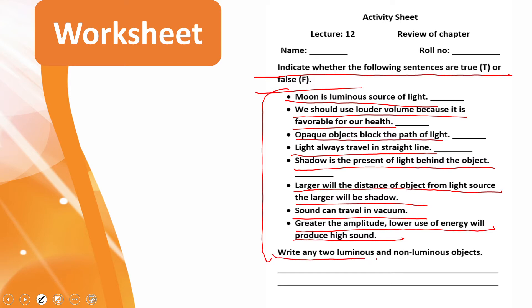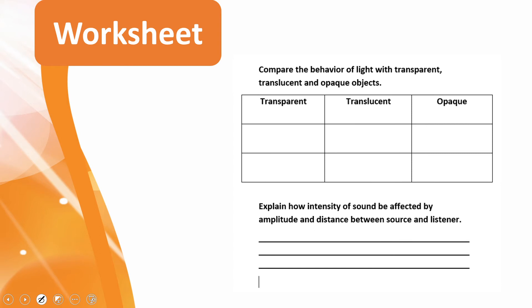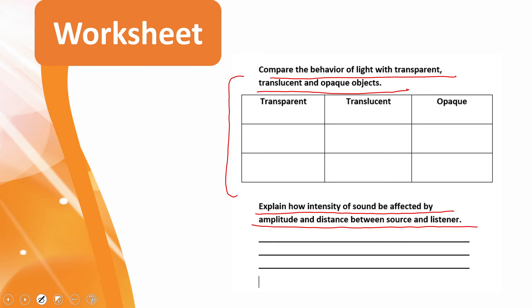You have to tell whether the sentences are true or false. Also write any two luminous and non-luminous objects. Then compare the behavior of light with transparent, translucent, and opaque objects. Then explain how the intensity of sound is affected by amplitude and the distance between the source and listener. Pause the video and quickly finish the worksheet.